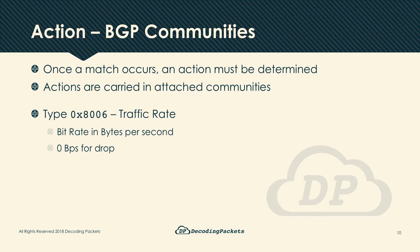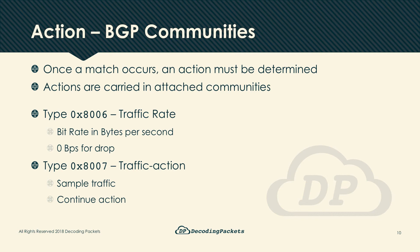The first extended community type is 0x8006, which carries a traffic rate for the matching traffic. The bitrate is carried in bytes per second, though most controllers will allow the rate to be configured in bits per second. Counterintuitively, this community is also used to carry the deny action: for a deny, the controller sets a data rate of zero bytes per second — you see zero bytes per second and you drop the traffic.